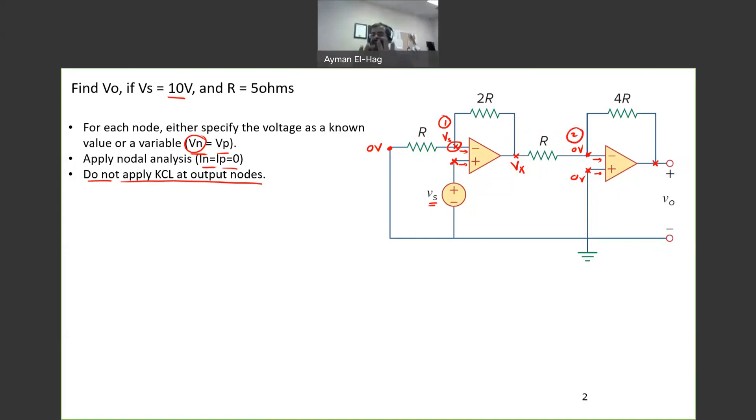And now we are ready. So we apply KCL at node number one. So we assume the currents are leaving. So we have this current and I have this current. And we know that this current going into the op-amp is equal to zero. So we have only two currents. So the current that going to the left, we have here Vs minus zero divided by R.